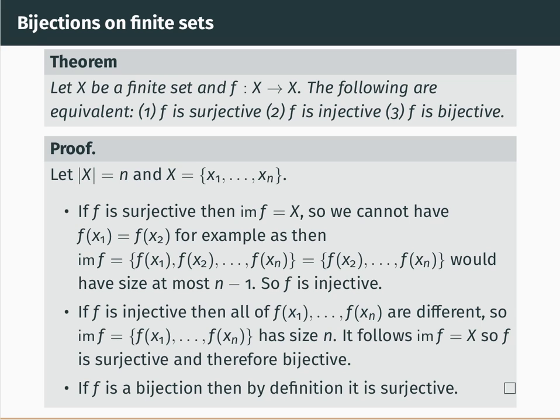For the proof, let's fix notation: let X have size n, a natural number since X is finite, with distinct elements x1 up to xn. We will show that one implies two, two implies three, and three implies one. We begin by showing that one implies two.